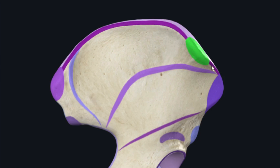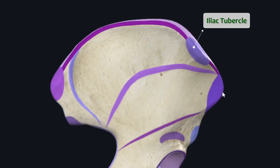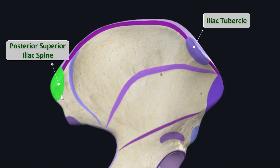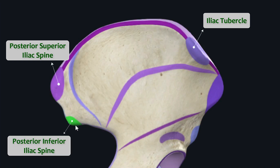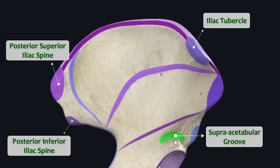This prominence found about two inches or five centimeters behind the anterior superior iliac spine is the iliac tubercle. This blunt process serving as the posterior end of the iliac crest is the posterior superior iliac spine, so the iliac crest runs from the anterior superior iliac spine to the posterior superior iliac spine. The prominence located below the posterior superior iliac spine is the posterior inferior iliac spine. This curved depression posterior superior to the acetabulum is the supraacetabular groove, which serves as an attachment site for the rectus femoris muscle.